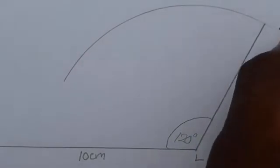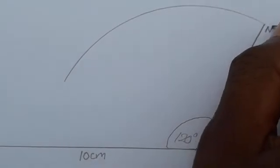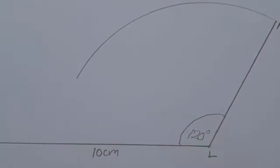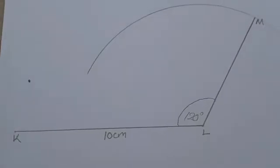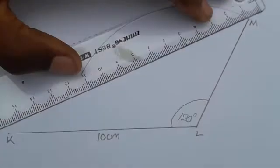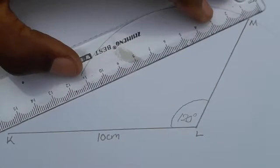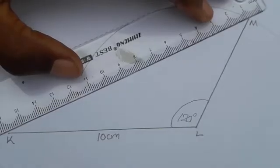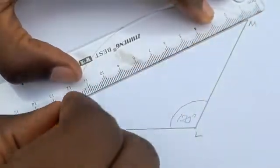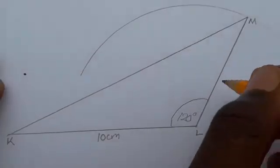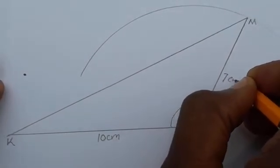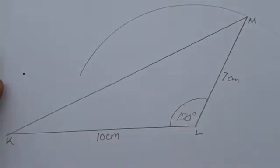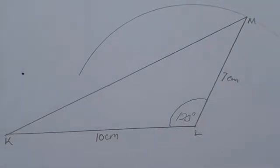Where the line meets the arc is point M. Since this is a triangle, join M to K to complete triangle KLM. Remember LM was measured as 7 centimeters.